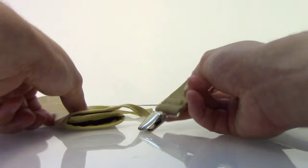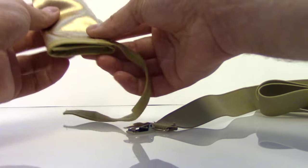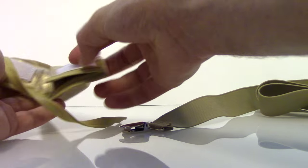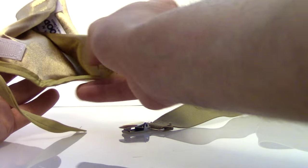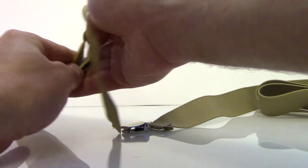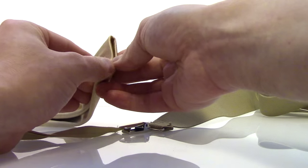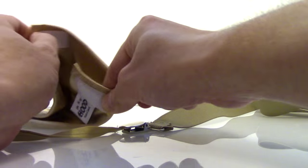So we started making these custom manhoods. This end is a regular manhood, has the velcro opening that you put your penis through, but there's also a second opening on this end to feed the device through.